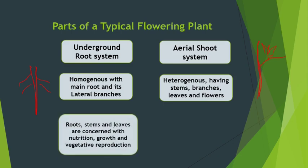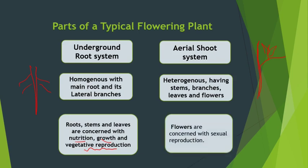The roots, stems, and leaves are concerned with nutrition, growth, and even vegetative reproduction. You might have known that Bryophyllum carries out vegetative reproduction by leaves, or Muraiya (kadipatta) carries out vegetative reproduction by roots. But flowers in Angiospermic plants play a very important role — they are concerned with sexual reproduction because they have both gynoecium and androecium. The shoot system is heterogeneous, having stems, branches, leaves, and flowers.